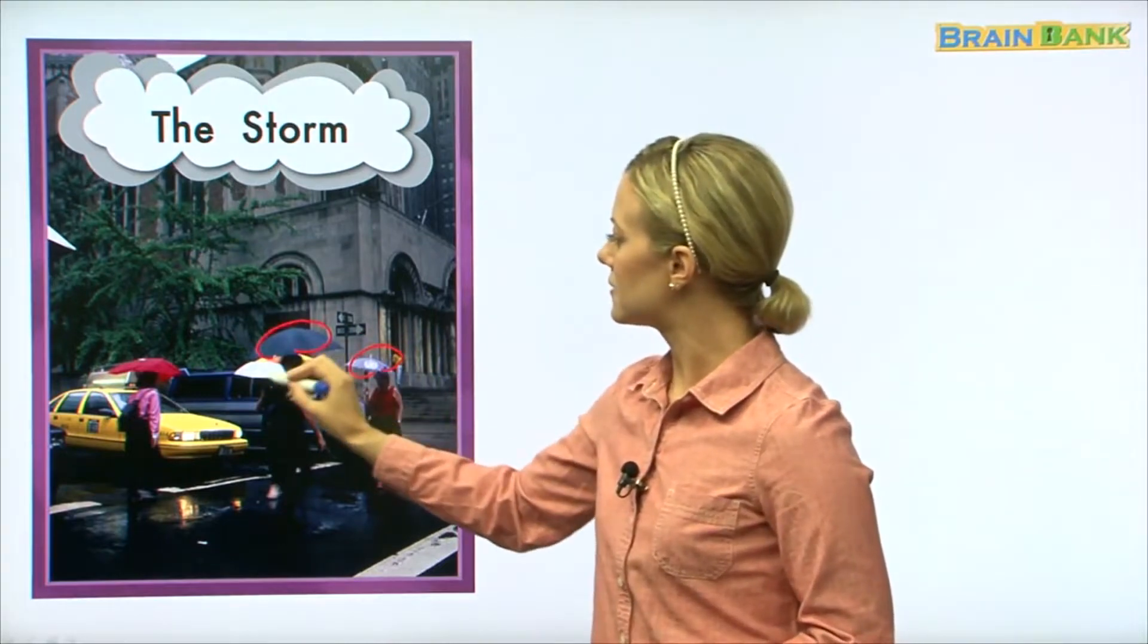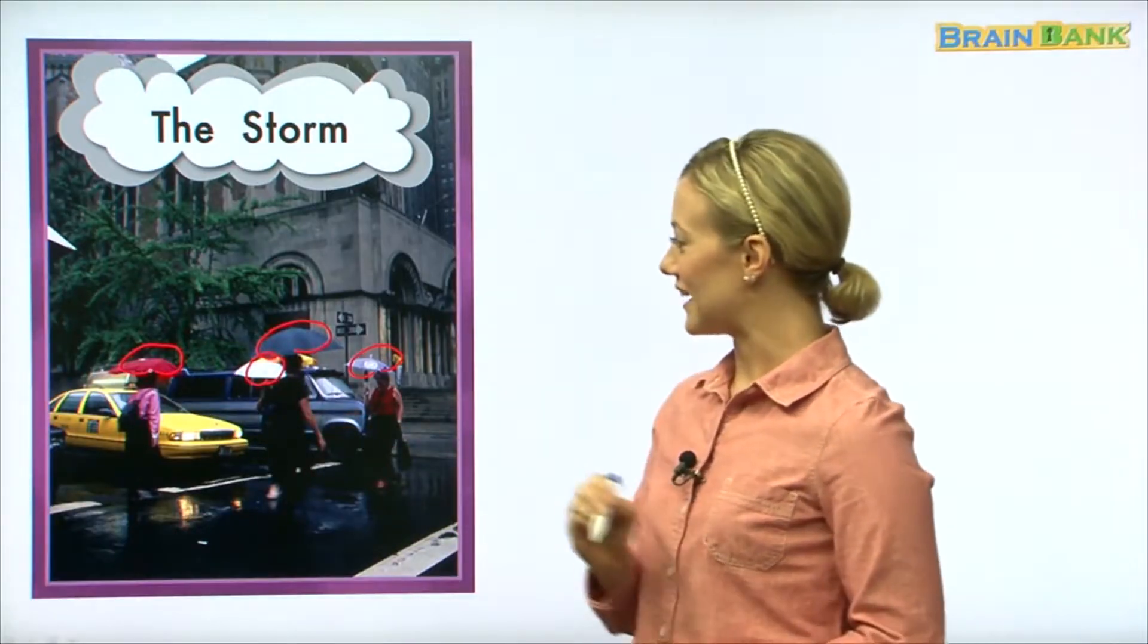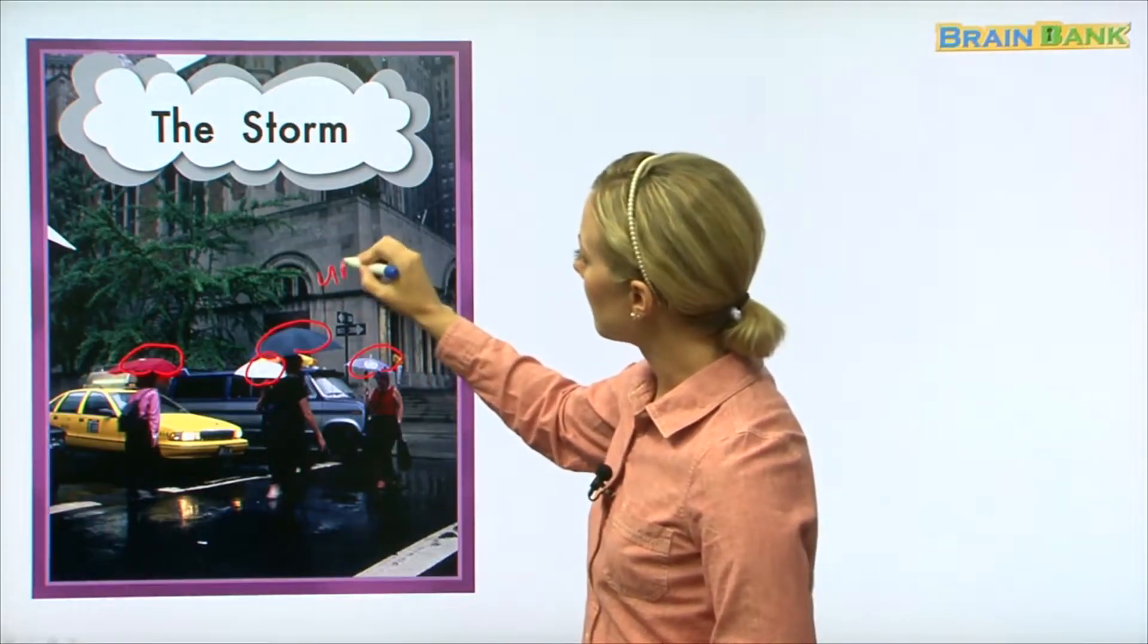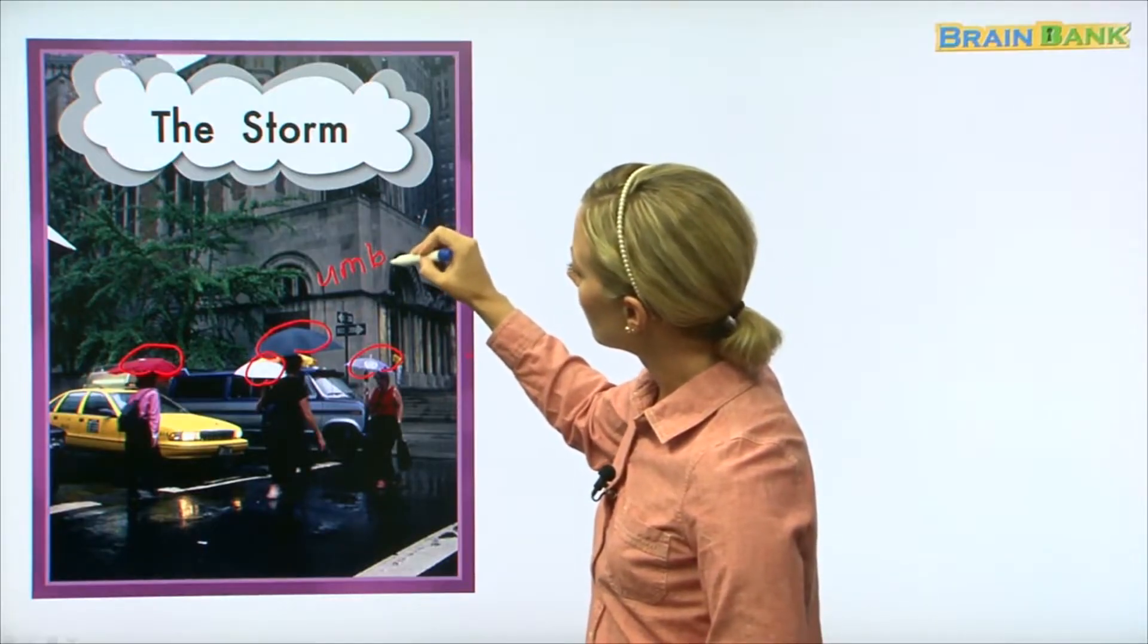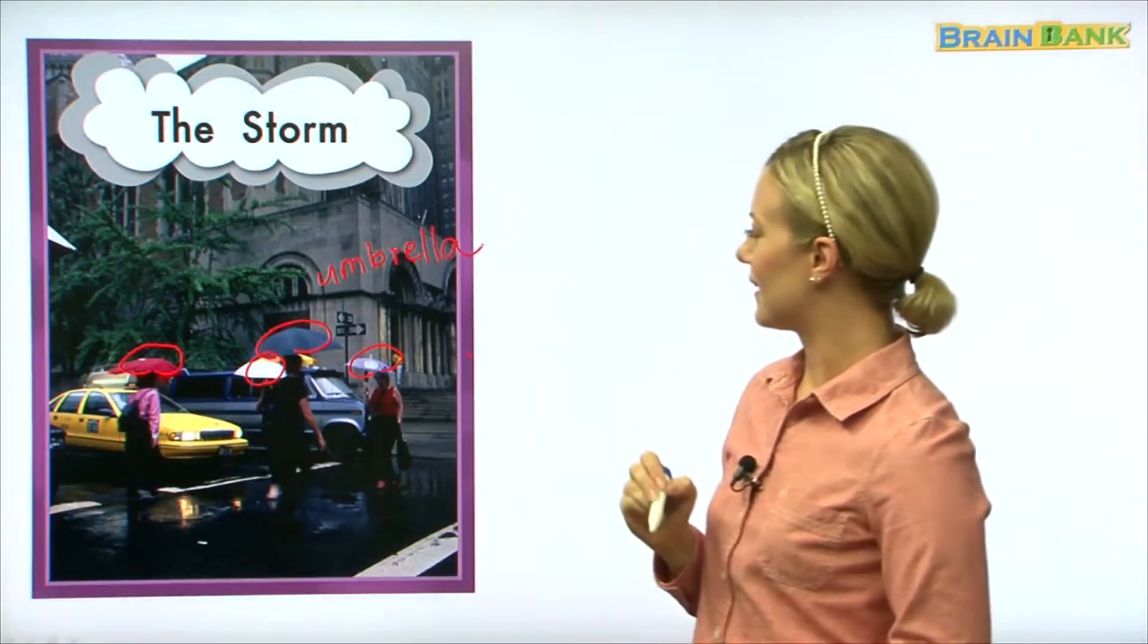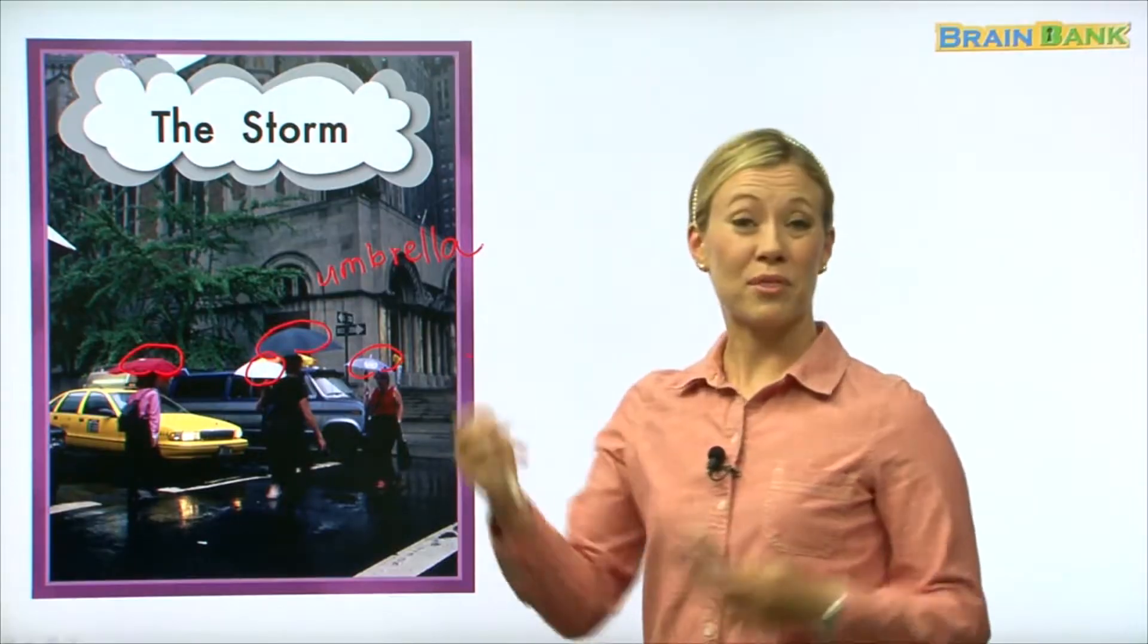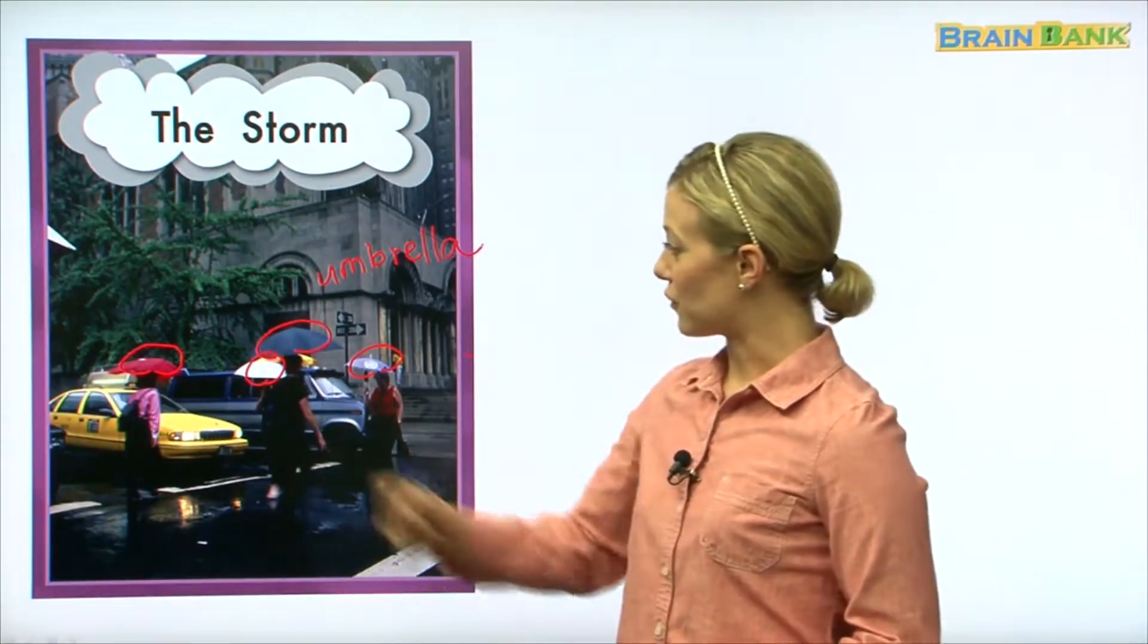That's right, we call each one of those an umbrella. U-M-B-R-E-L-L-A, umbrella. These are called umbrellas, very good. And umbrellas keep the rain from getting us all wet, because nobody wants to be all wet if they're going to work or going to school, right?